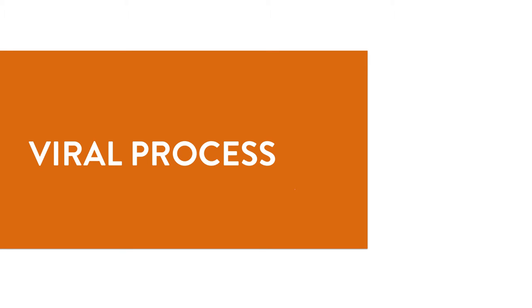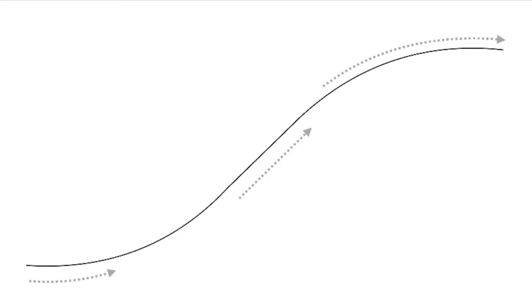Right, so what about this viral process? Well, essentially it's a way to break down this curve or this pattern that looks like a leaning S or a landing Superman into something more that we can consume, that we can actually do something with.